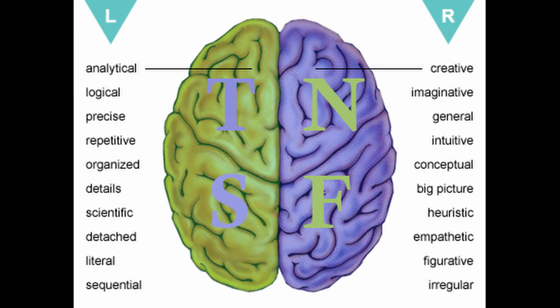For example, the left hemisphere keywords — analytical, logical, details, literal — I see these as very much thinking and sensation: the realistic side of the brain. Whereas the right is creative, imaginative, emotionally intelligent, intuitive, conceptual — that's the N and F side of the brain, while the left is more T and S. Of course, they operate on an axis.